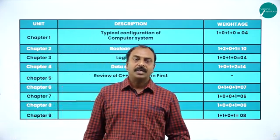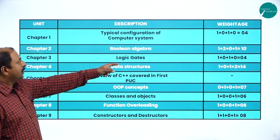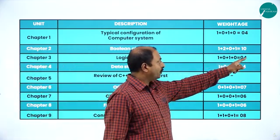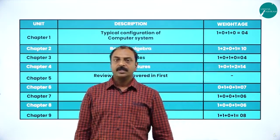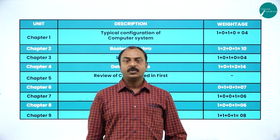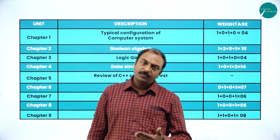Chapter three is Logic Gates, with a weightage of four marks — one MCQ and one three-marks question. In this chapter we are going to learn the definition of logic gates, different types of logic gates like basic logic gates and derived logic gates, their logical symbols and truth tables, and also how to design a logical circuit.